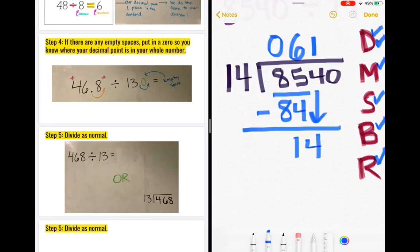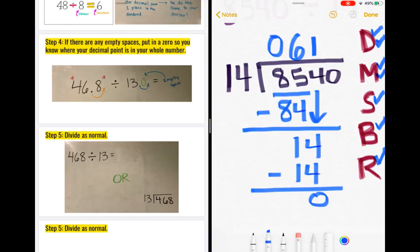I move down to multiplication: I multiply my divisor times whatever number I just wrote up in my quotient, so that means 14 times 1, and I write 14 down here. The next step is subtraction: 14 minus 14 equals zero. I check off subtraction. I then go to bring down and look at my dividend — is there a number to bring down? Yes, we have to bring down that zero. I check it off.